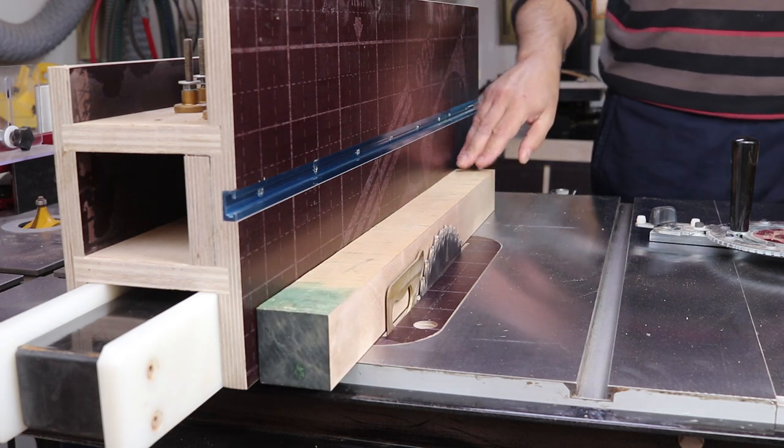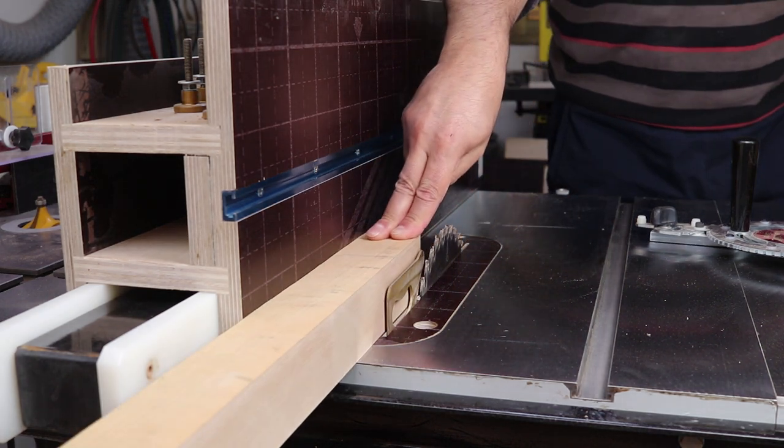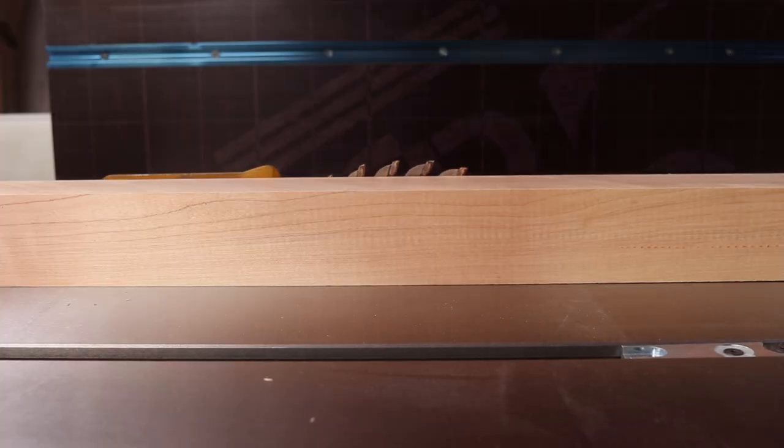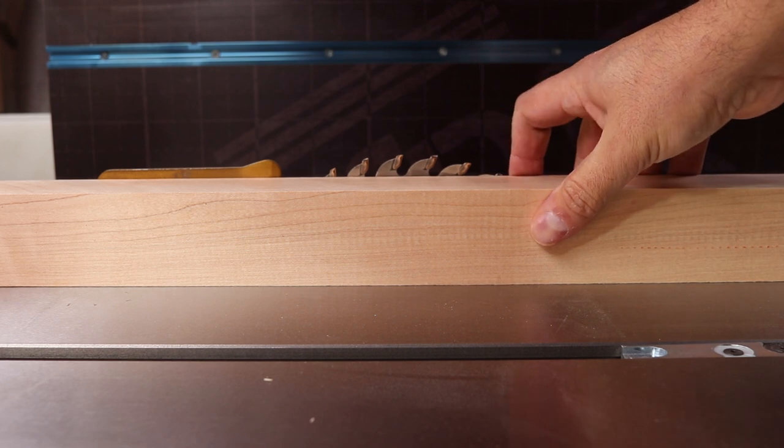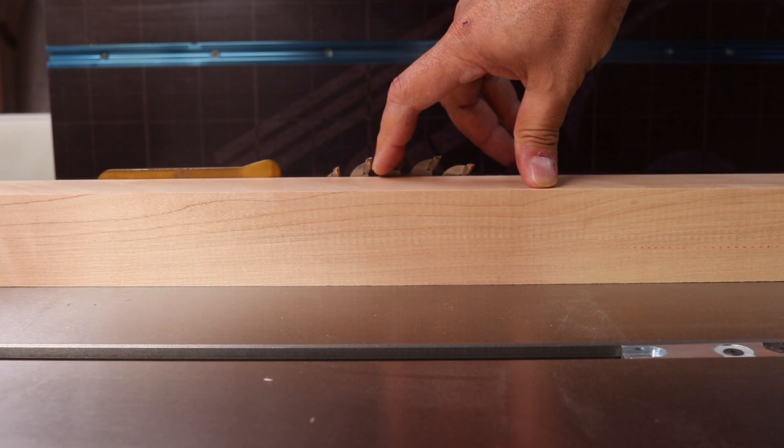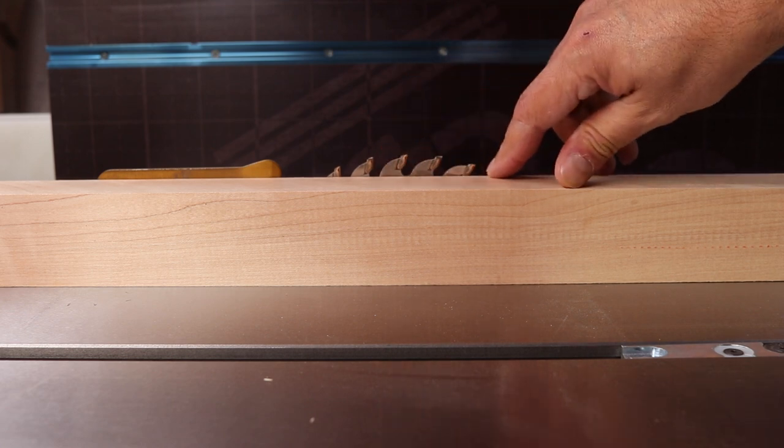Table saw is superior for ripping cuts as it cuts clean and square if it is well tuned. When ripping wood it is recommended to raise the blade until the blade gullets are just above the workpiece surface. This will reduce heat buildup and give the blade the chance to excavate the sawdust produced by the cutting action.